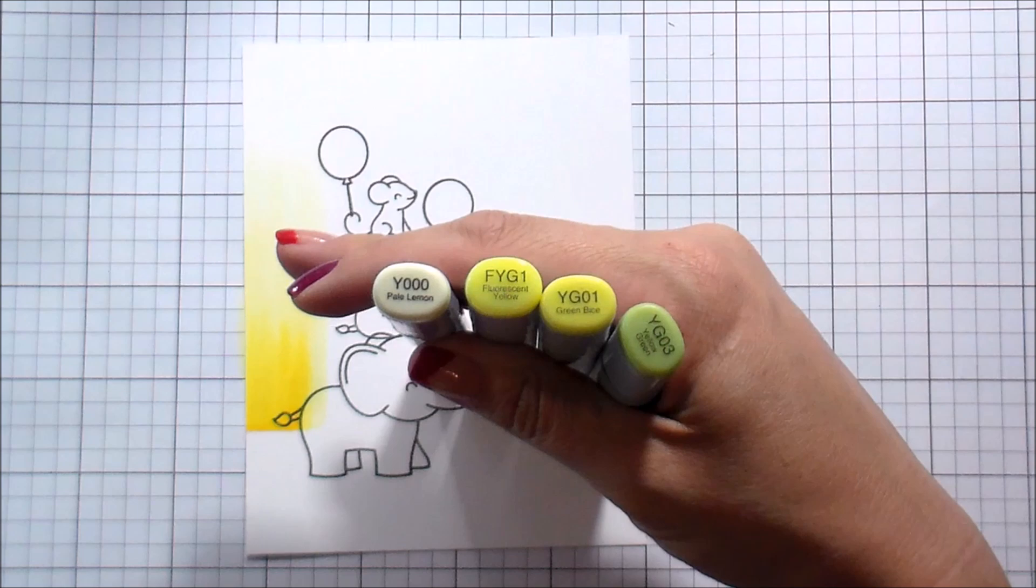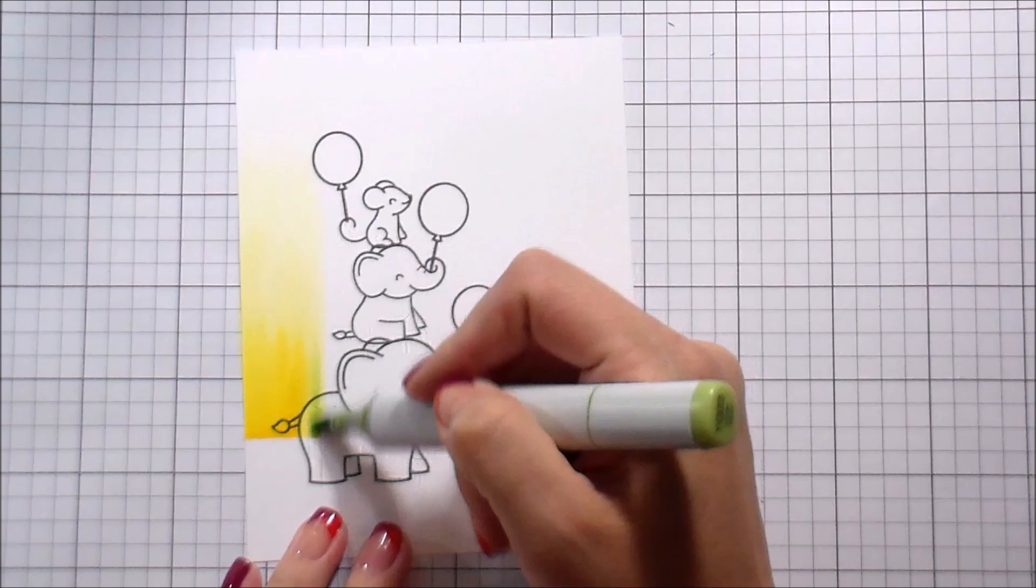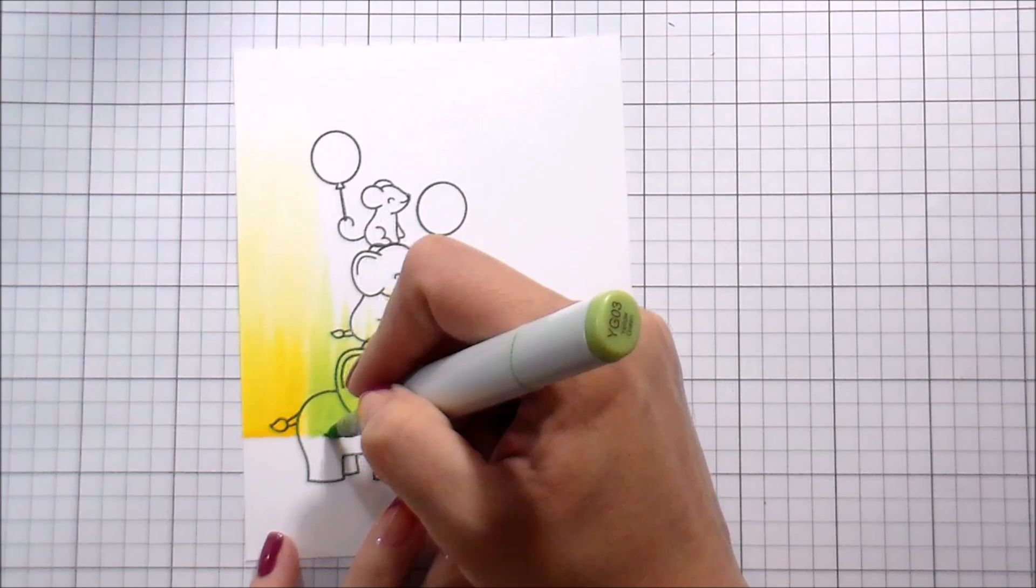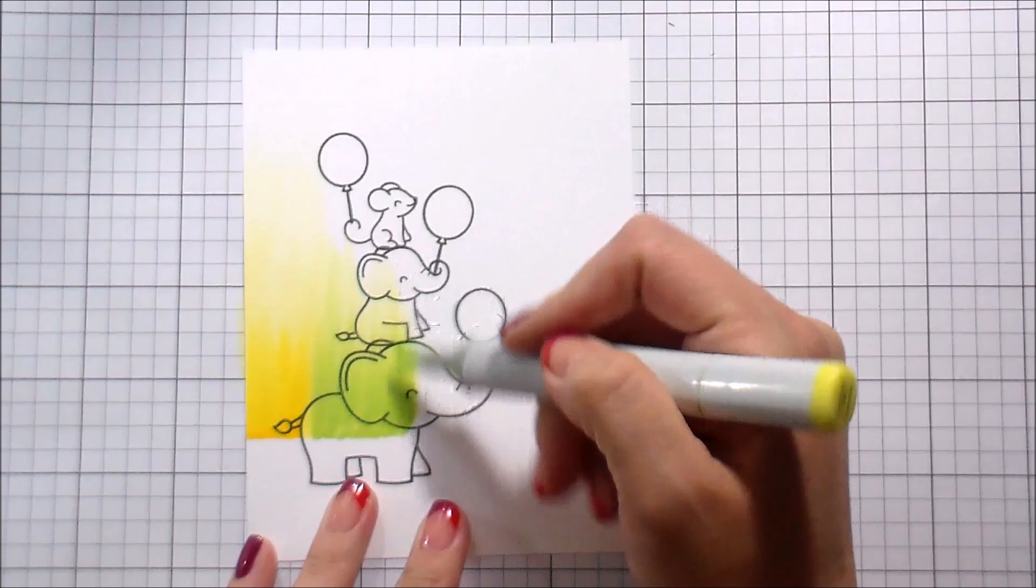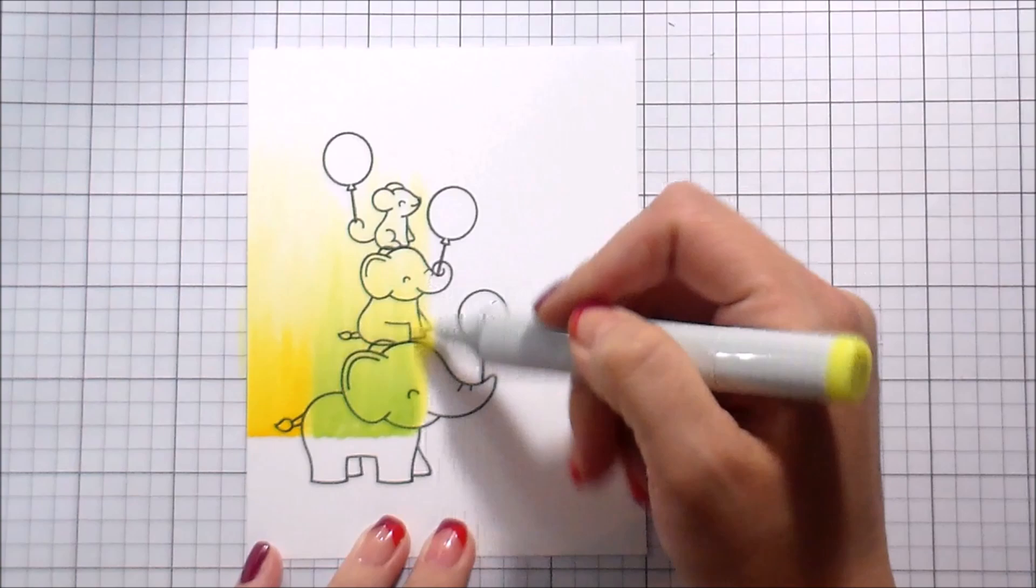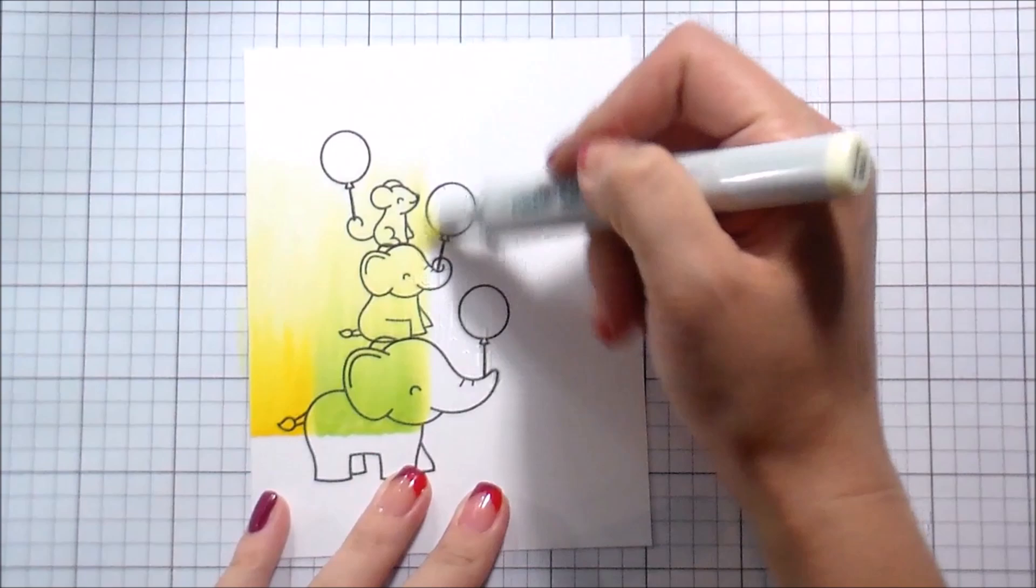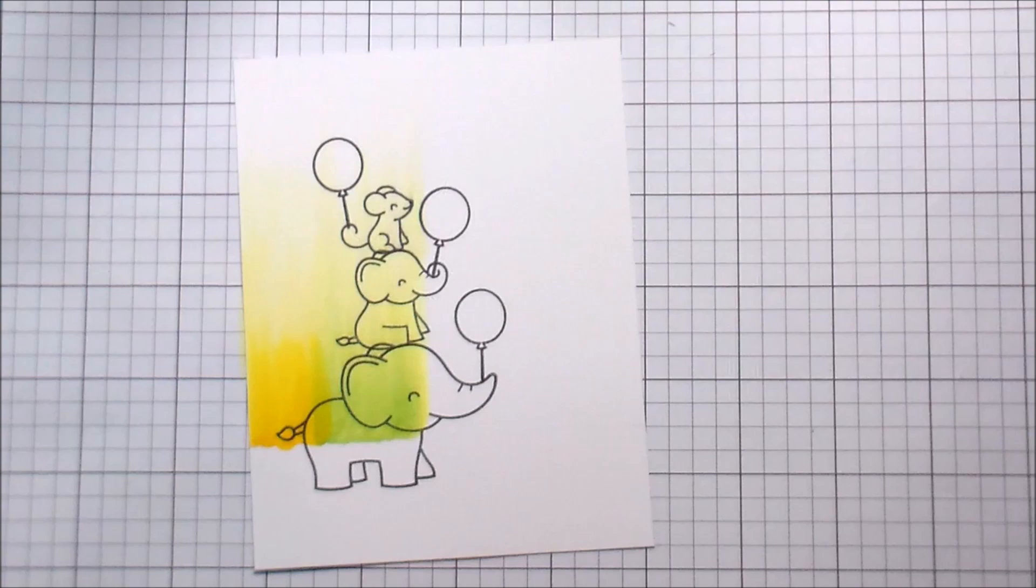For my yellow greens, my lightest color is going to be the same color as I used for the yellow, because once you get to those lighter tones, you really can't even tell the difference. And I don't have a yellow green that is that light. So I'm just doing the same thing going over it. I'm not worried too much at this point about blending the colors into each other.